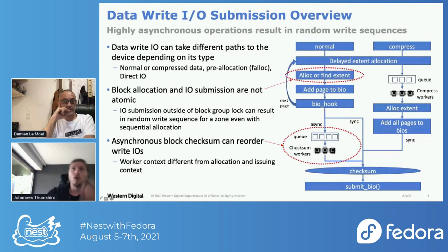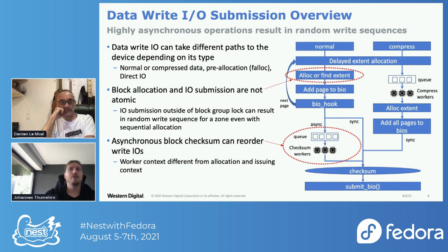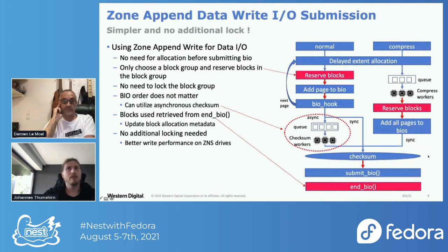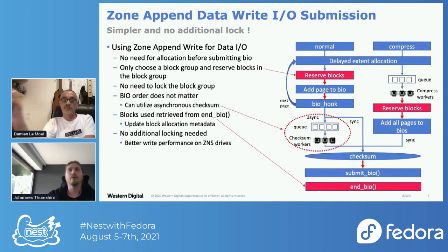Here is an overview of the data write path of ButterFS. As you can see, there's lots of parallelism - there's normal writes, there can be compressed writes, then there's delayed allocation. All this introduces a lot of asynchronicity and there's a lot of potential for unintentional reordering, which would then fail all writes to the device. That's why we had to use zone append for the data I/O submission. So the new allocator only needs to reserve blocks and it doesn't really care where a block gets written - it just needs to reserve it in the correct zone, and the device will handle most of the magic on itself.